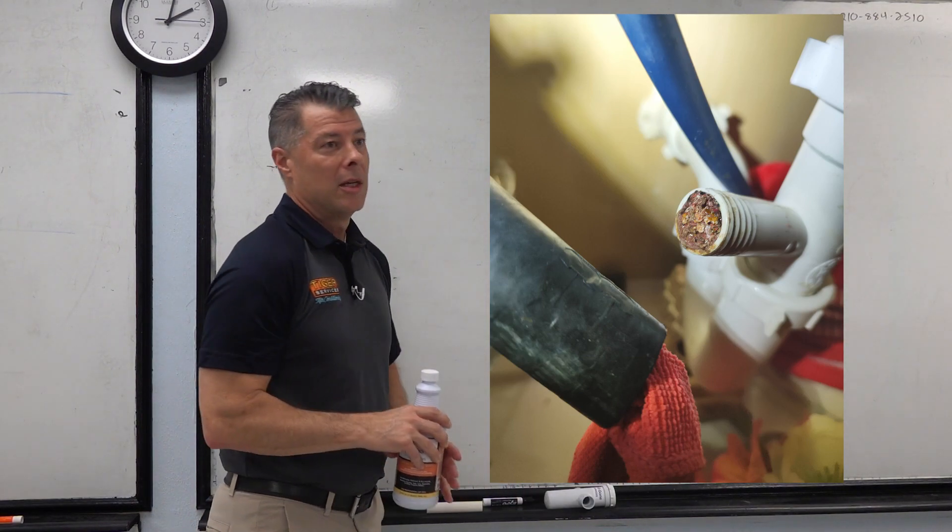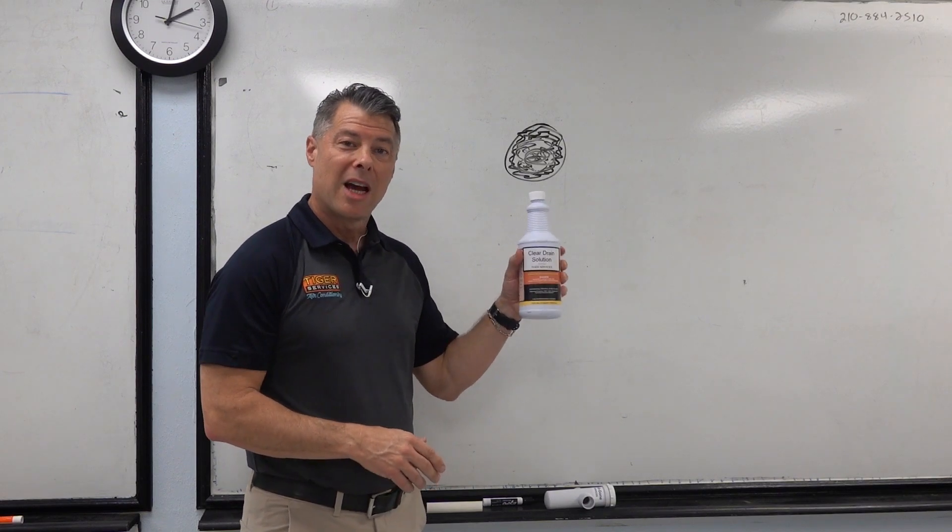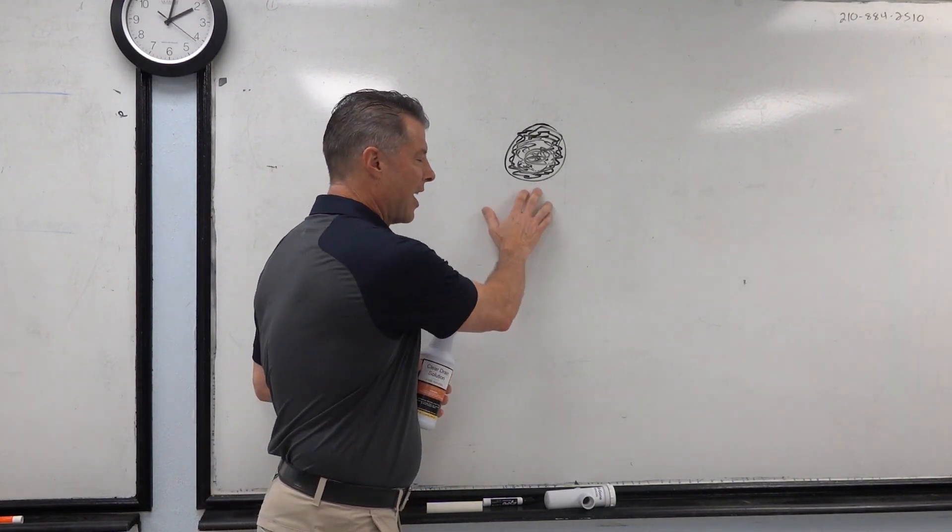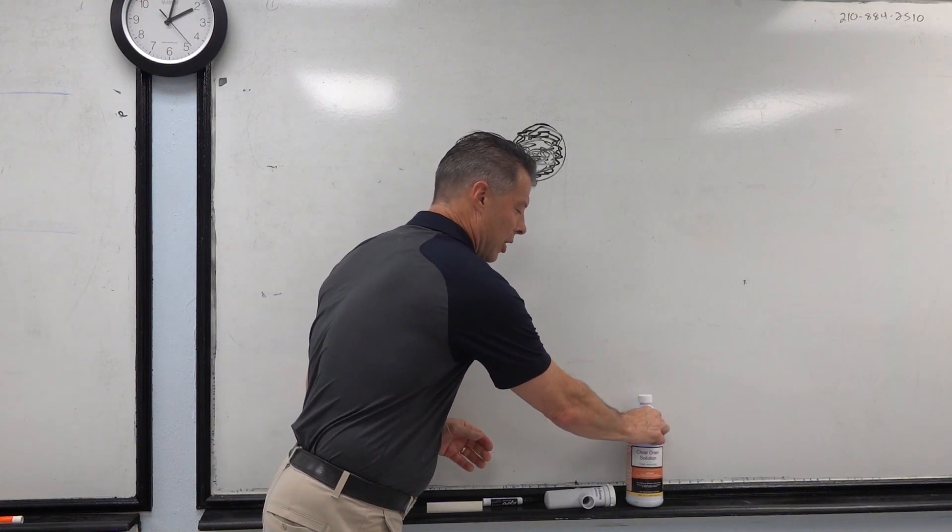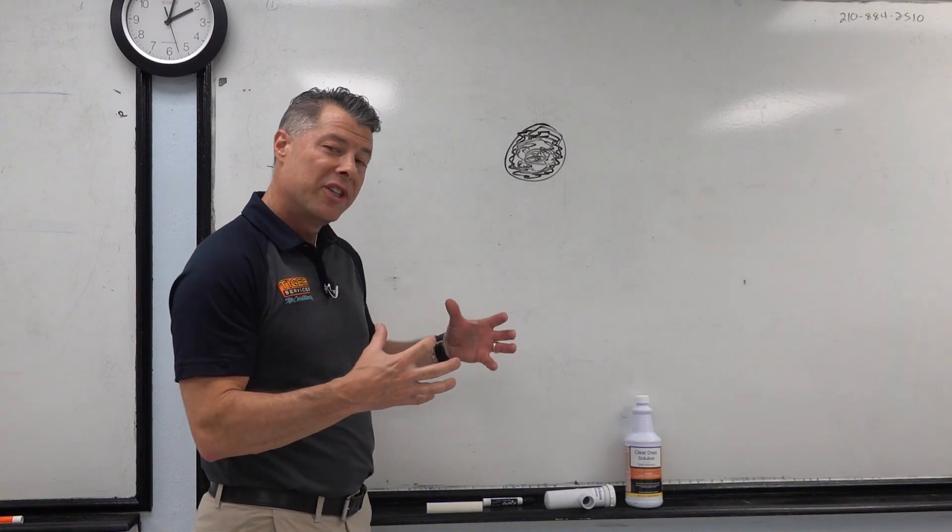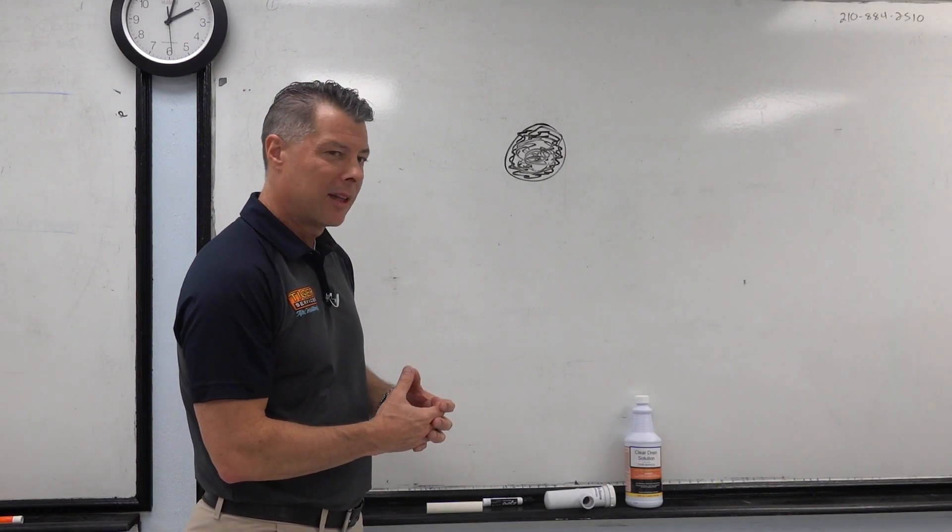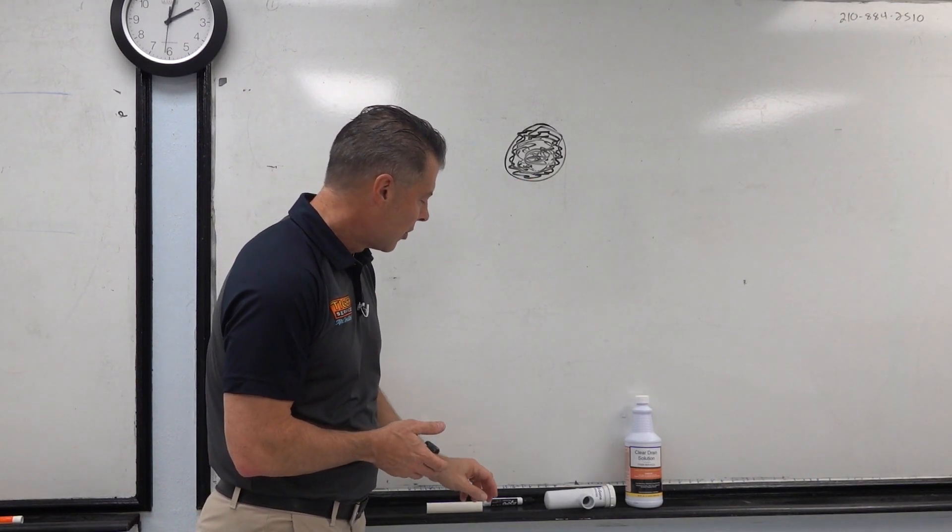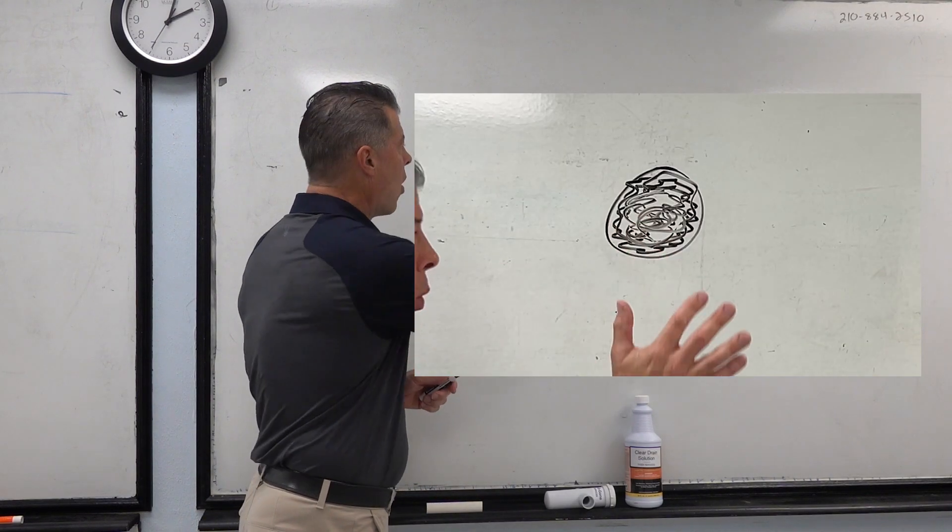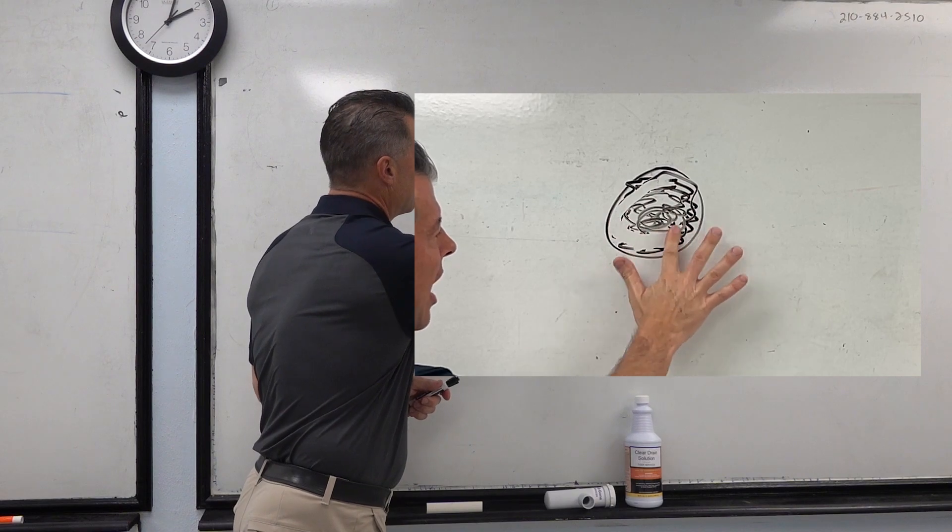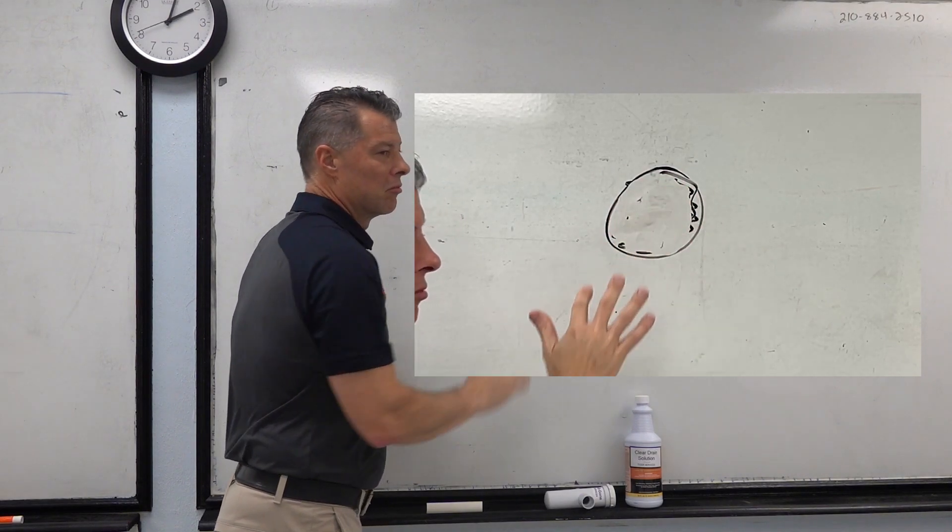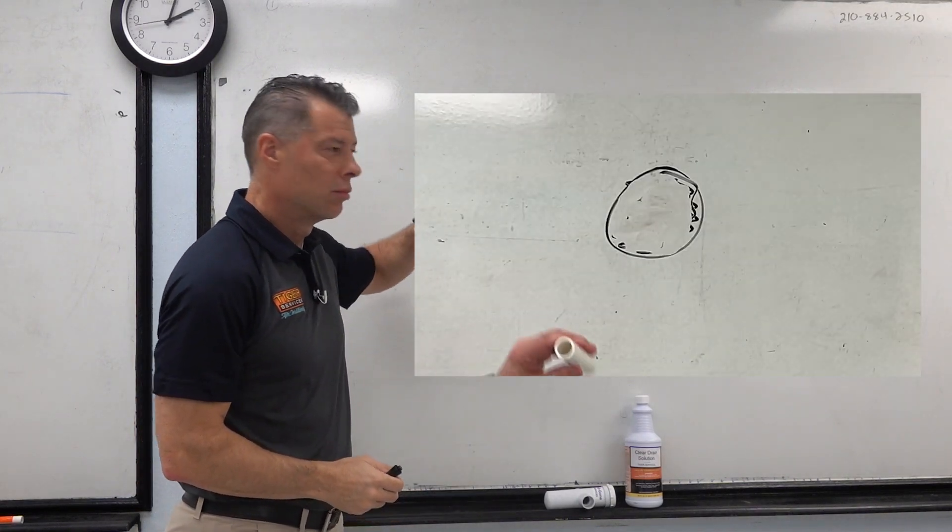So what we recommend is a product called CDS. It's a chemical that's made directly for condensate lines. It's not going to hurt your indoor coil. So what we do is we pour it in the condensate line at your inside unit. We wait about 15 minutes. We pour water in it, about two gallons. And when we're done, it kind of looks like that.